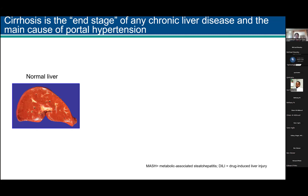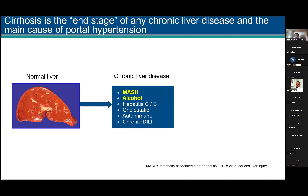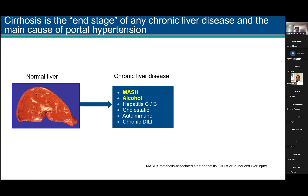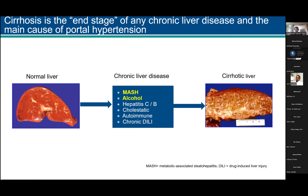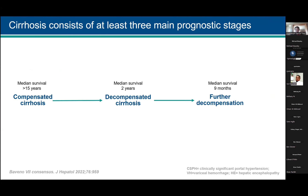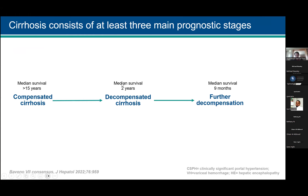The normal liver is nice, red and smooth. Anything that chronically affects the liver — right now our main etiologies are MASH and alcohol, each of which can actually damage the heart in itself — all these etiologies end up with the cirrhotic liver, a distorted yellow liver that is entirely nodular. But cirrhosis is not just cirrhosis; there are at least three prognostic stages. The compensated patient may look like any of us in the room, with median survival exceeding 15 years. The decompensated patient has a median survival that goes down to two years, and now we've described a new stage of further decompensation where the median survival is nine months.